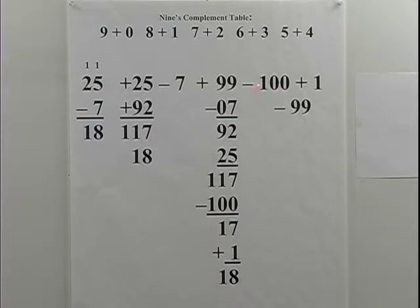Then I'm going to subtract this minus 100. When I do that, I get 0 from 7 is 7, 0 from 1 is 1, minus 1, 1 minus 1 is 0. So I get 17. Then I'm going to add this 1, plus 1, and I get 18. I get the correct difference.